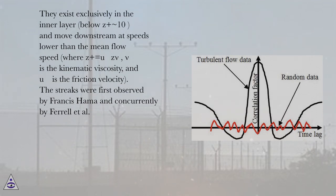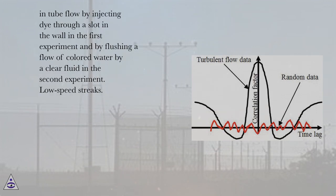In tube flow by injecting dye through a slot in the wall in the first experiment and by flushing a flow of colored water by a clear fluid in the second experiment. Low-speed streaks.